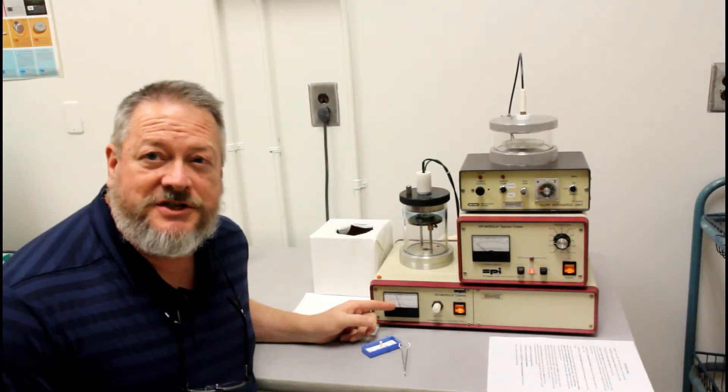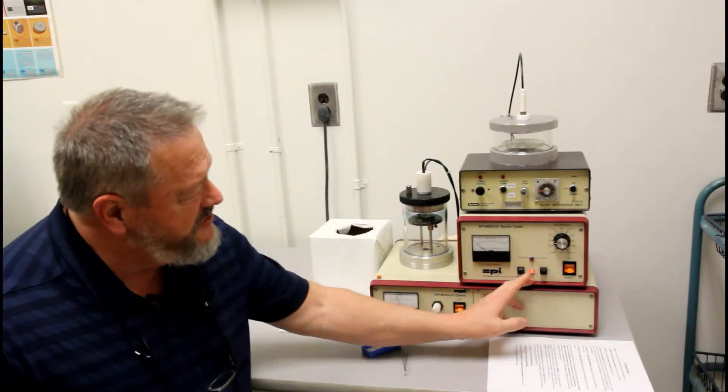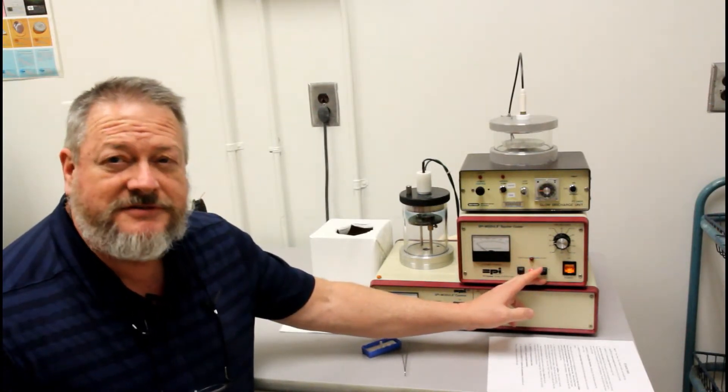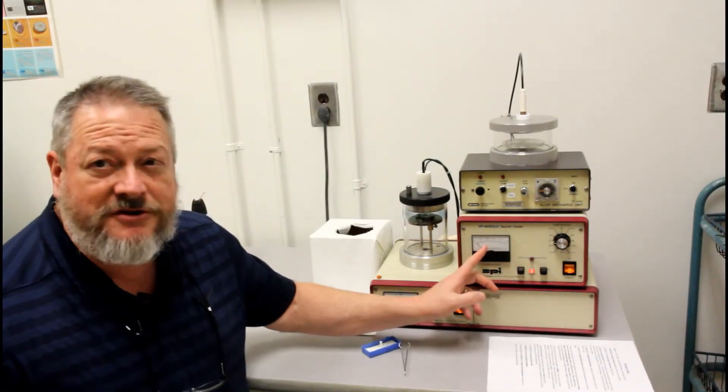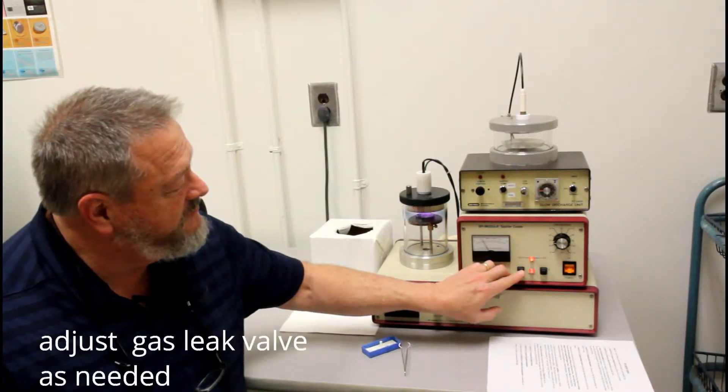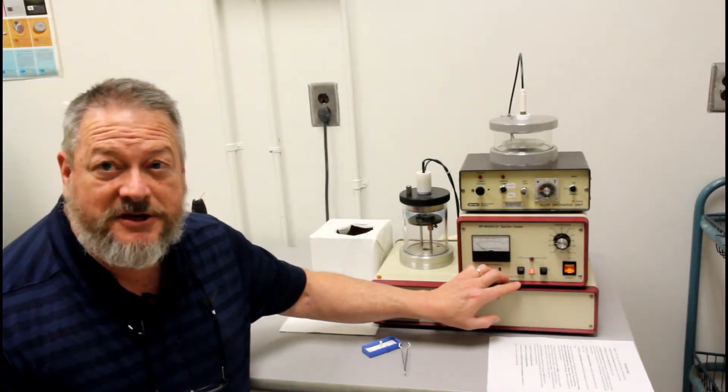Once the vacuum has reached an appropriate amount, you'll want to test this, and so you'll push the test button. There's a test and a start button. The test button, as it runs, will allow you to see whether or not you're getting 15 milliamps or not. And we are, so I'm going to go ahead and start sputter coating.